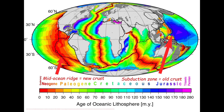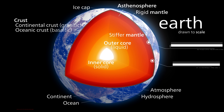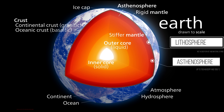Continental lithosphere is around 200 kilometers thick; however, this varies between basins, mountain ranges, and continent's stable cratonic interiors. Underneath the lithosphere, the asthenosphere exists. The lithosphere is colder and more rigid, whereas the asthenosphere is warmer and more fluid.